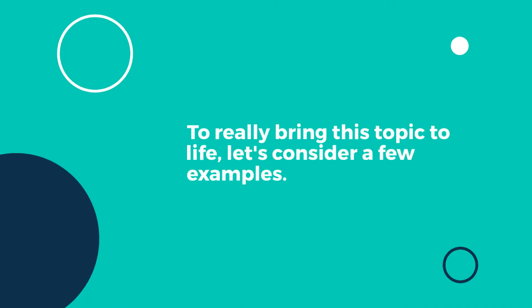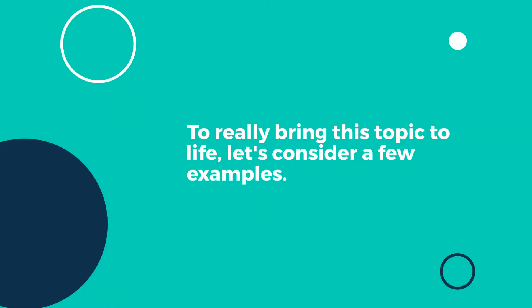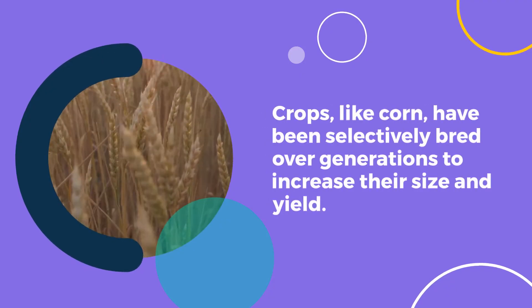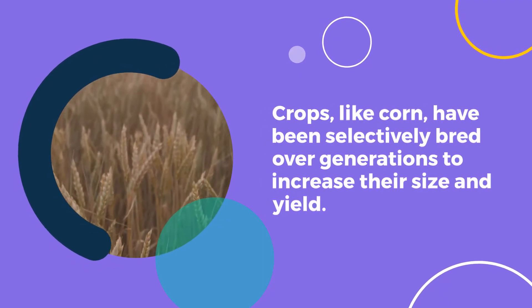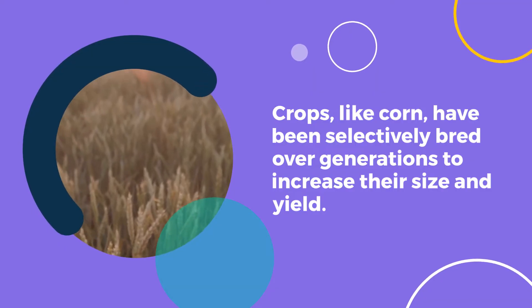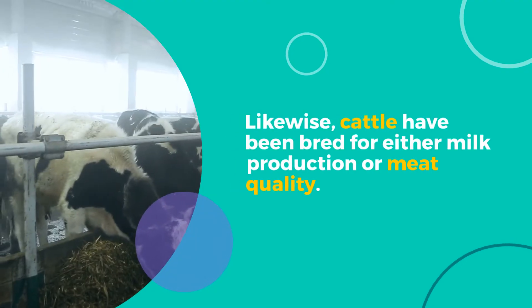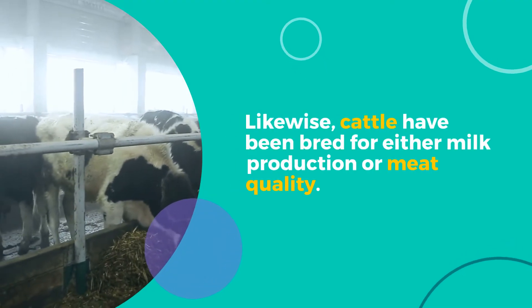To really bring this topic to life, let's consider a few examples. Crops, like corn, have been selectively bred over generations to increase their size and yield. Likewise, cattle have been bred for either milk production or meat quality.